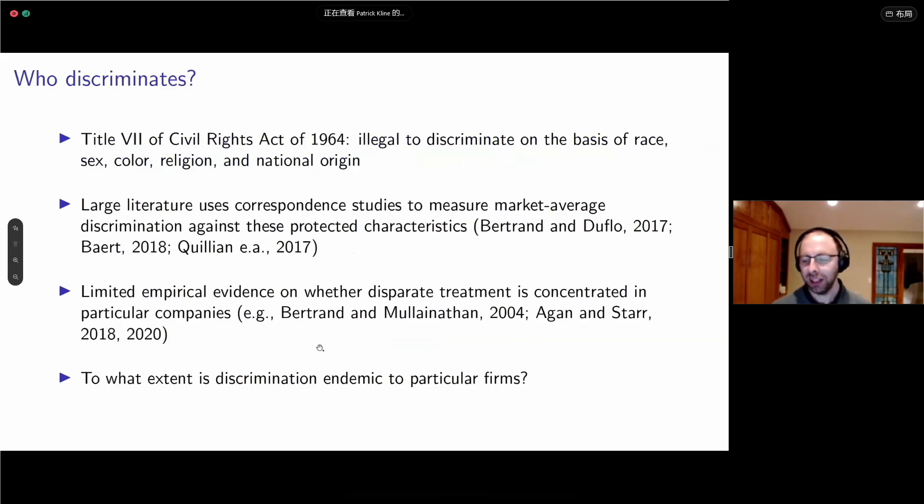So in the U.S., Title VII of the Civil Rights Act prohibits discrimination on the basis of certain protected characteristics, including race, sex, color, religion, and national origin. There is a very large literature throughout the social sciences that uses correspondence studies to measure average levels of discrimination in a given labor market against these protected characteristics. In economics, many are familiar with the seminal work by Bertrand and Mullainathan, but there's actually a large sociology literature as well.